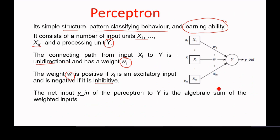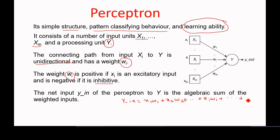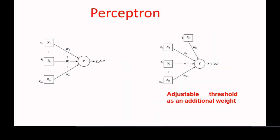The net input to the processing unit is nothing but the algebraic sum of the weighted inputs. We can write y_in as the net input, which is the algebraic sum of the weighted inputs: x1 multiplied by w1, xi multiplied by wi, up to xm multiplied by wm.